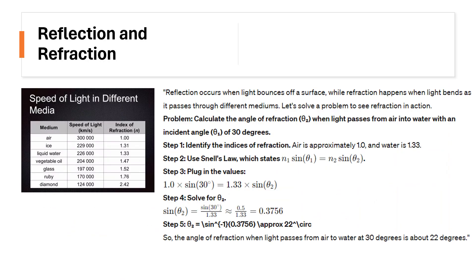Reflection occurs when light bounces off a surface, while refraction happens when light bends as it passes through different mediums. At the left side, we can see a table indicating the speed of light in different media: from air, ions, and other objects here like glass, ruby, diamond. They have different refraction indices. You can have a copy of this for you to be able to solve other sample problems involving refraction. Let's now have a problem solving activity here. Let's read the problem.